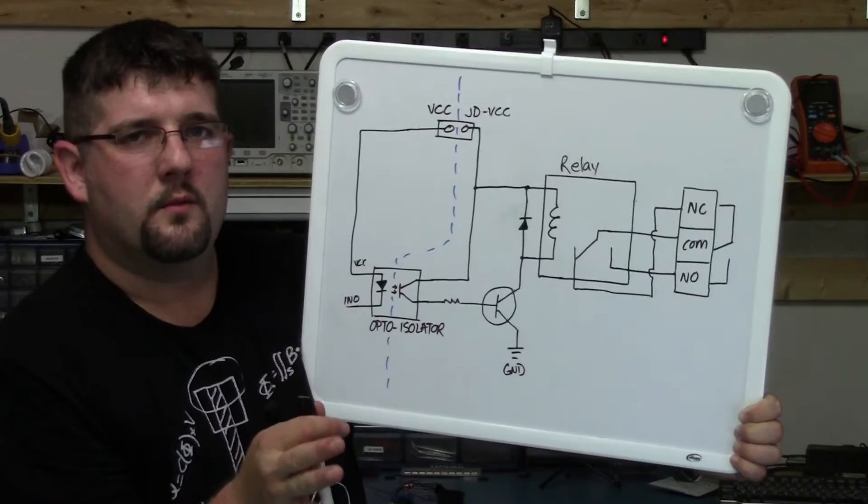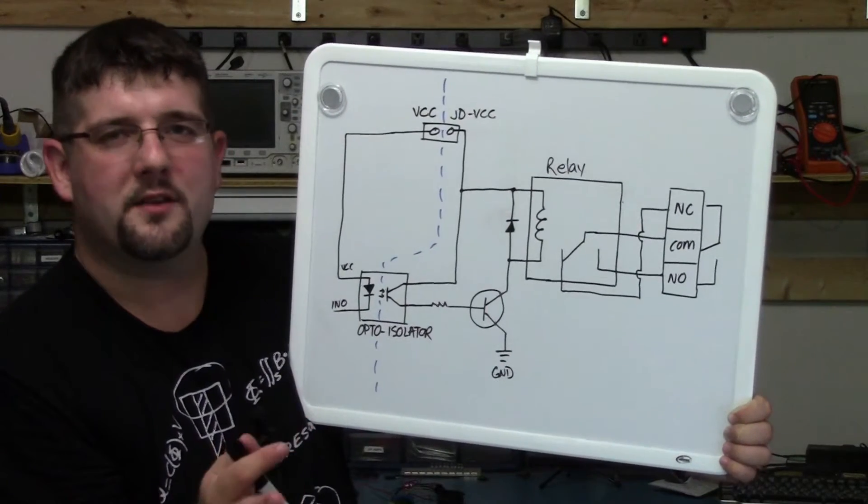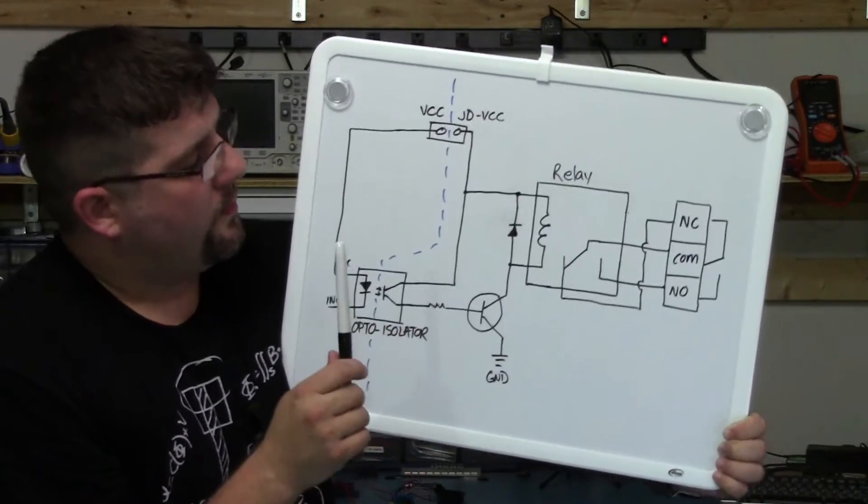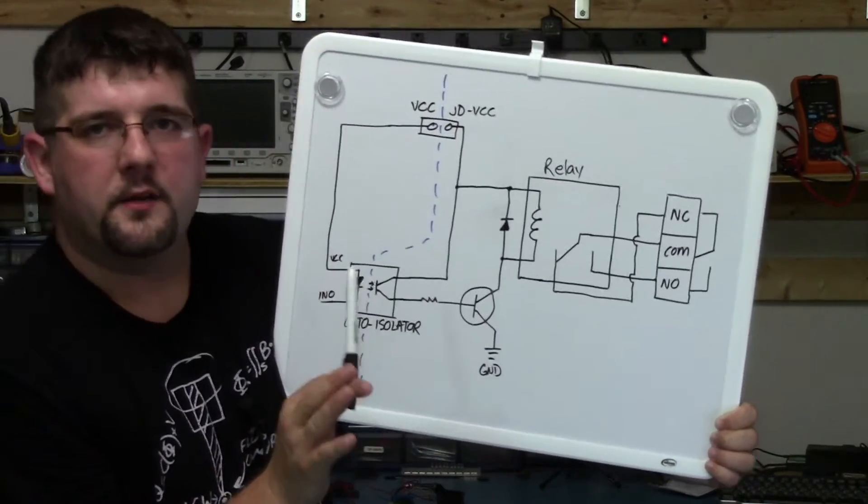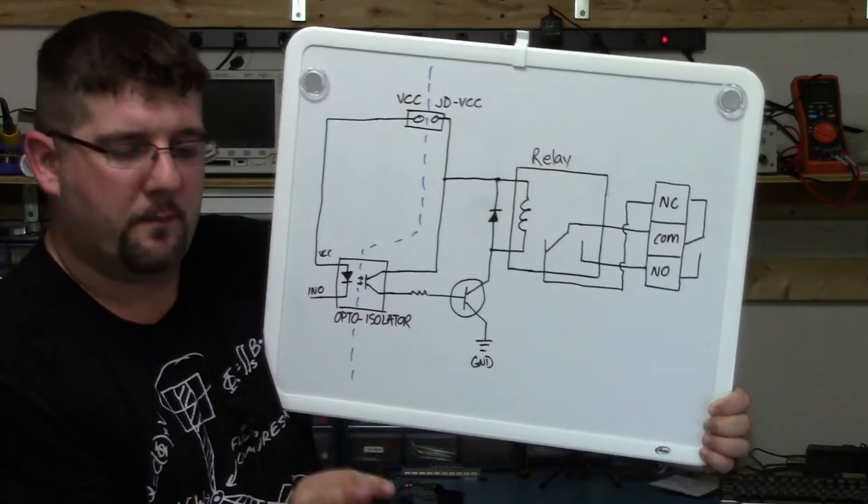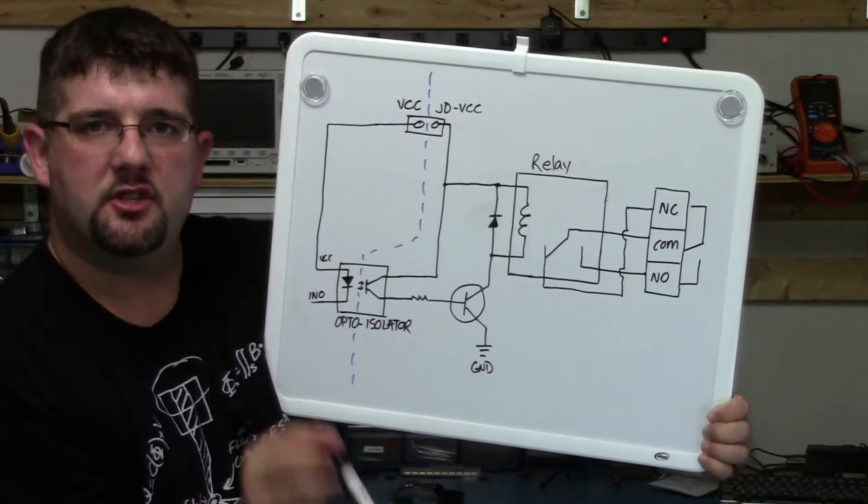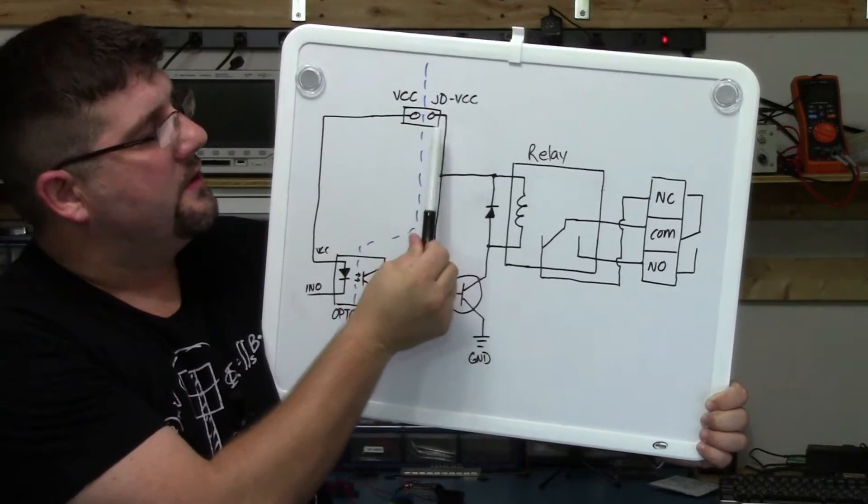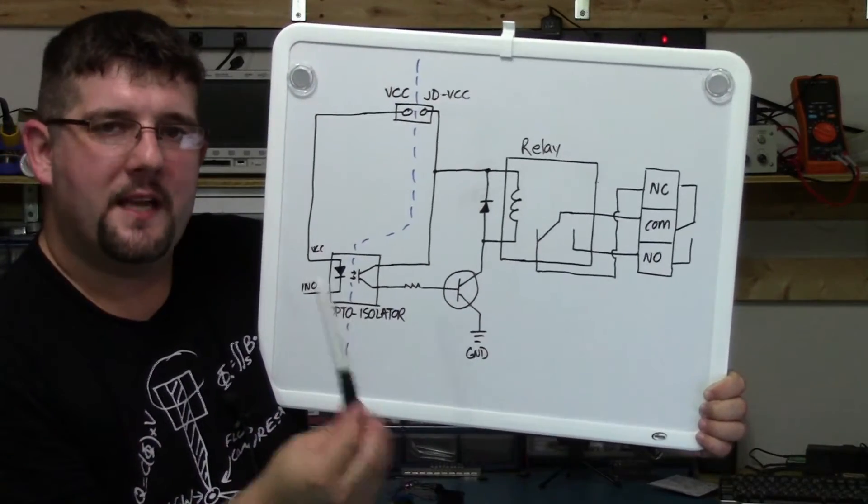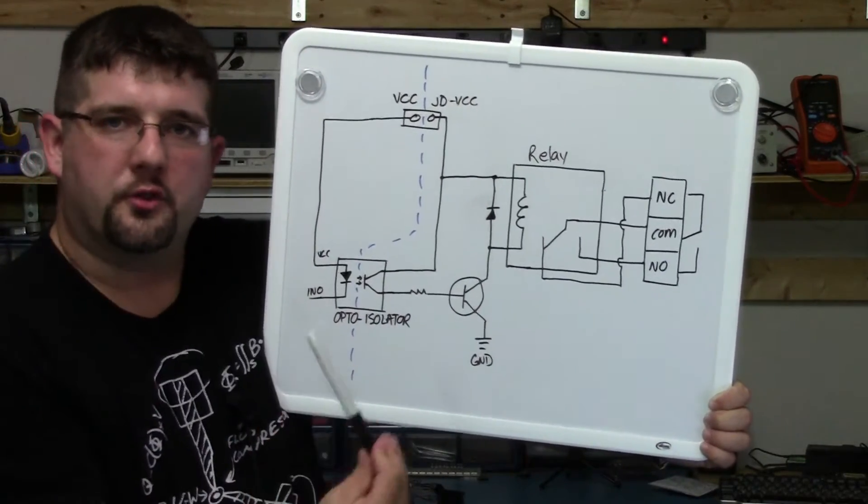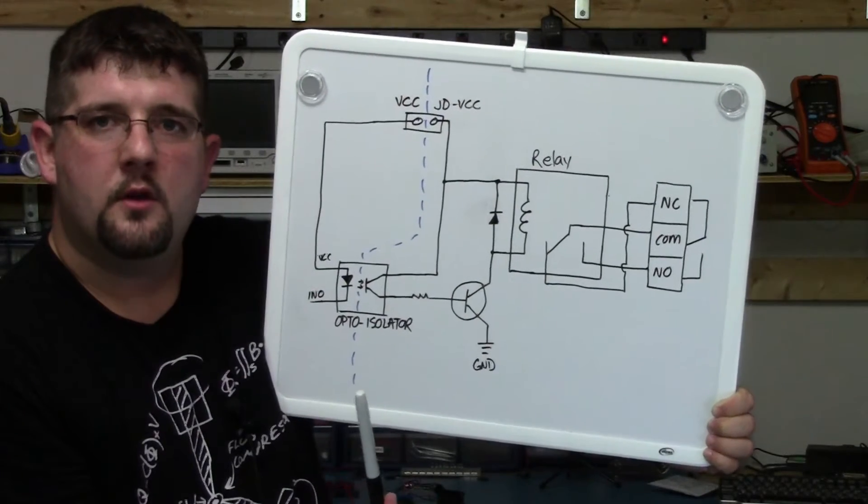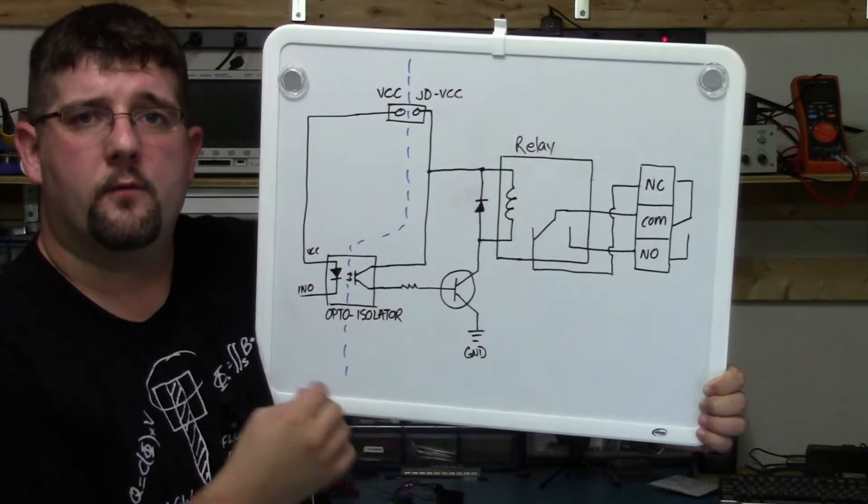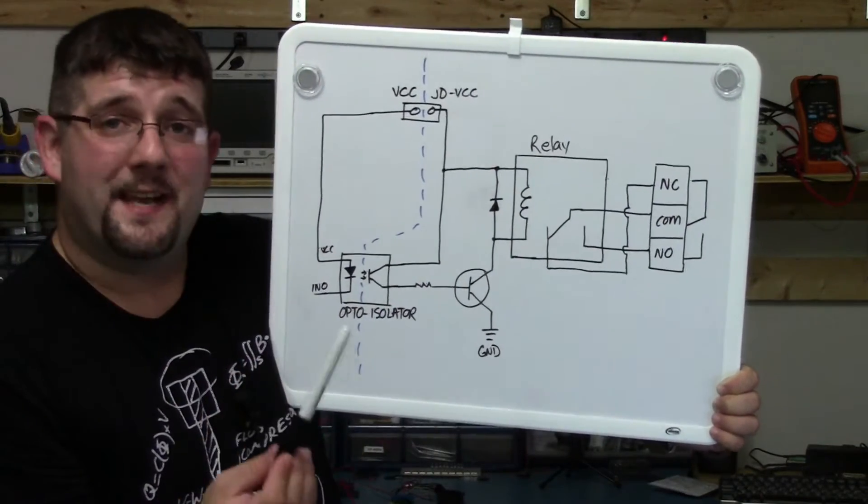You're saying, wait a minute, JDVCC and VCC, what is all that? That starts to get a little confusing. What you'll find on a lot of relay boards is a jumper connection for both VCC and JDVCC. This allows us to either opto-isolate our control circuitry, in this case an Arduino, or to include that Arduino in the overall circuit. Why is that important?